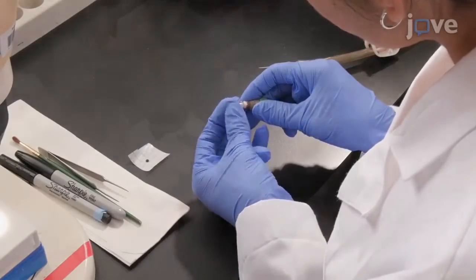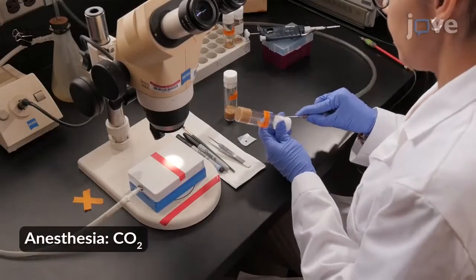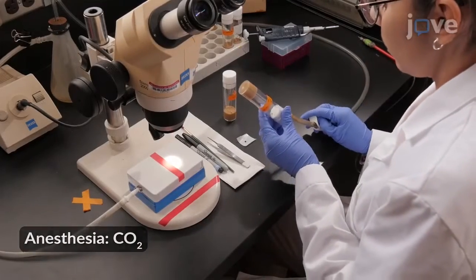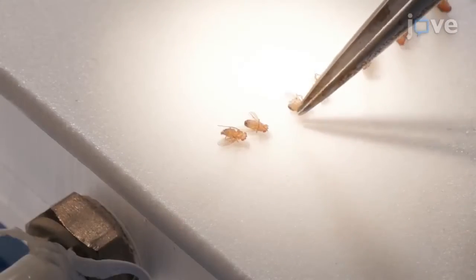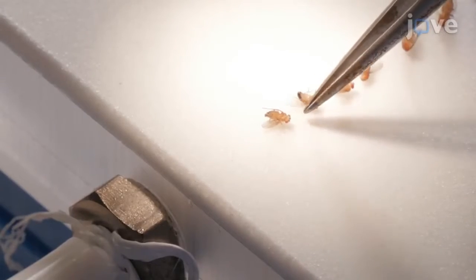Mount the needle into the injector nozzle, and line the anesthetized flies along their designated area on the fly pad, ventral side up, with the heads oriented toward the front of the pad.